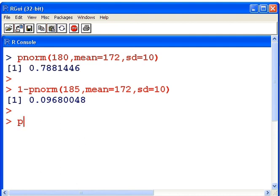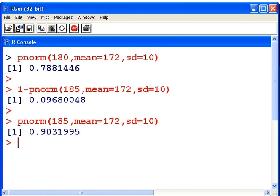185, mean is 172, but we're also going to use the lower equals FALSE approach. So, that is 185, mean of 172, and standard deviation equals 10.